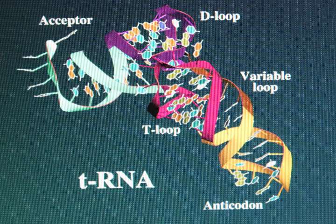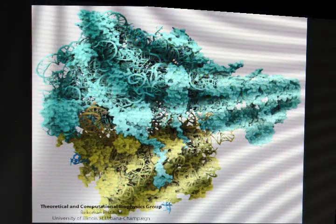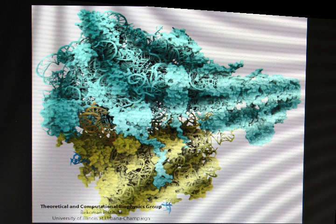And then ribosomes are about 60% RNA and 40% protein. They have a very complicated structure, but they're made largely of RNA, and the RNA is largely in the form of stem loops.